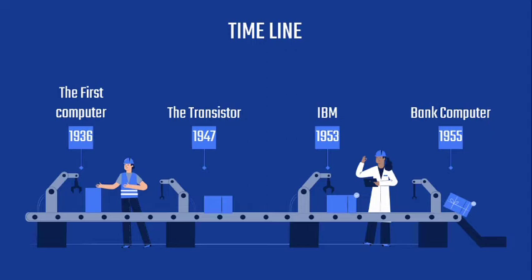In 1936, the first fully programmable computer came into play. In 1937, there is the transistor. The transistor was invented by Bell Telephone Company. It wasn't a computer in itself, but it was a vital computer component.